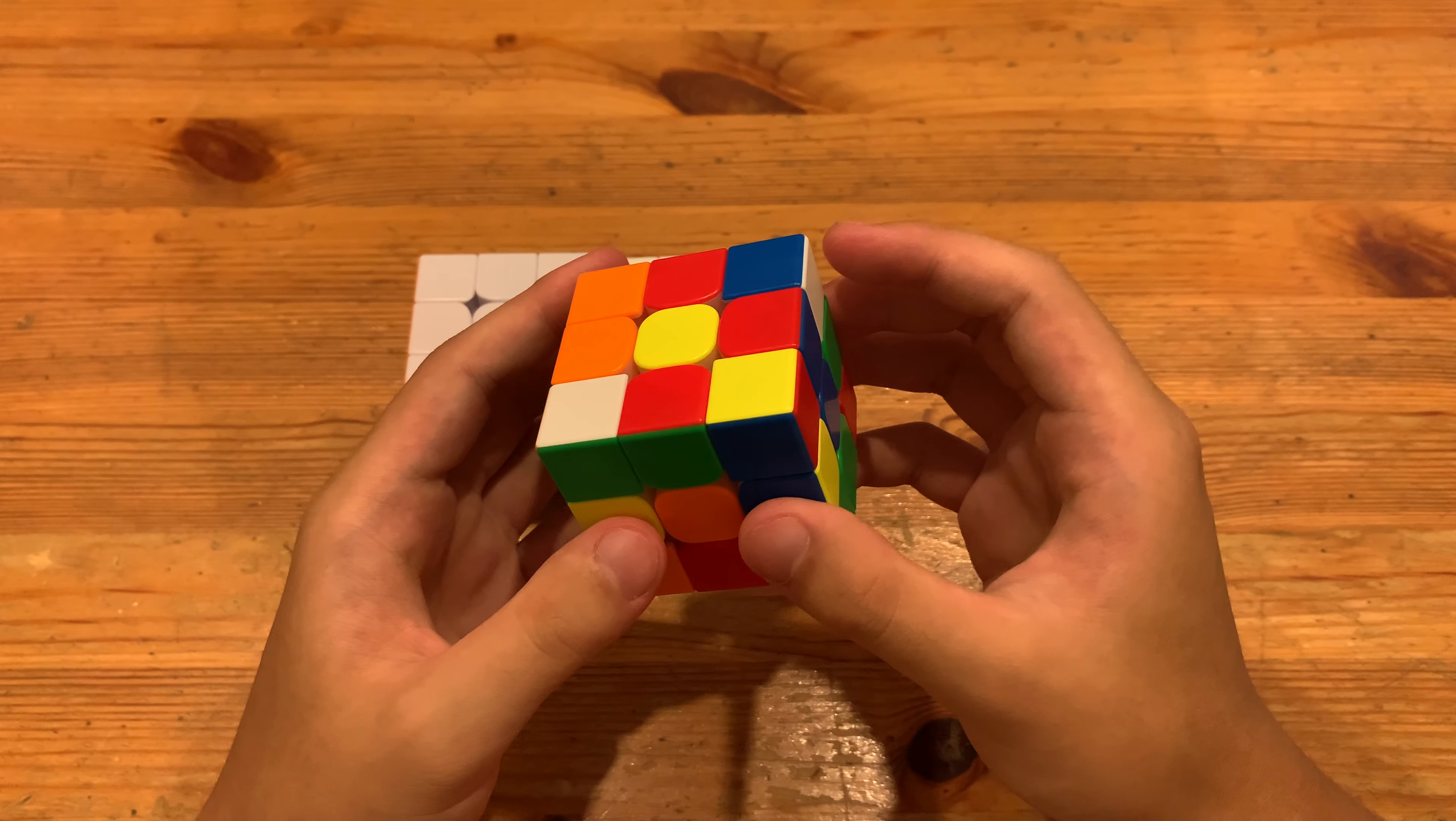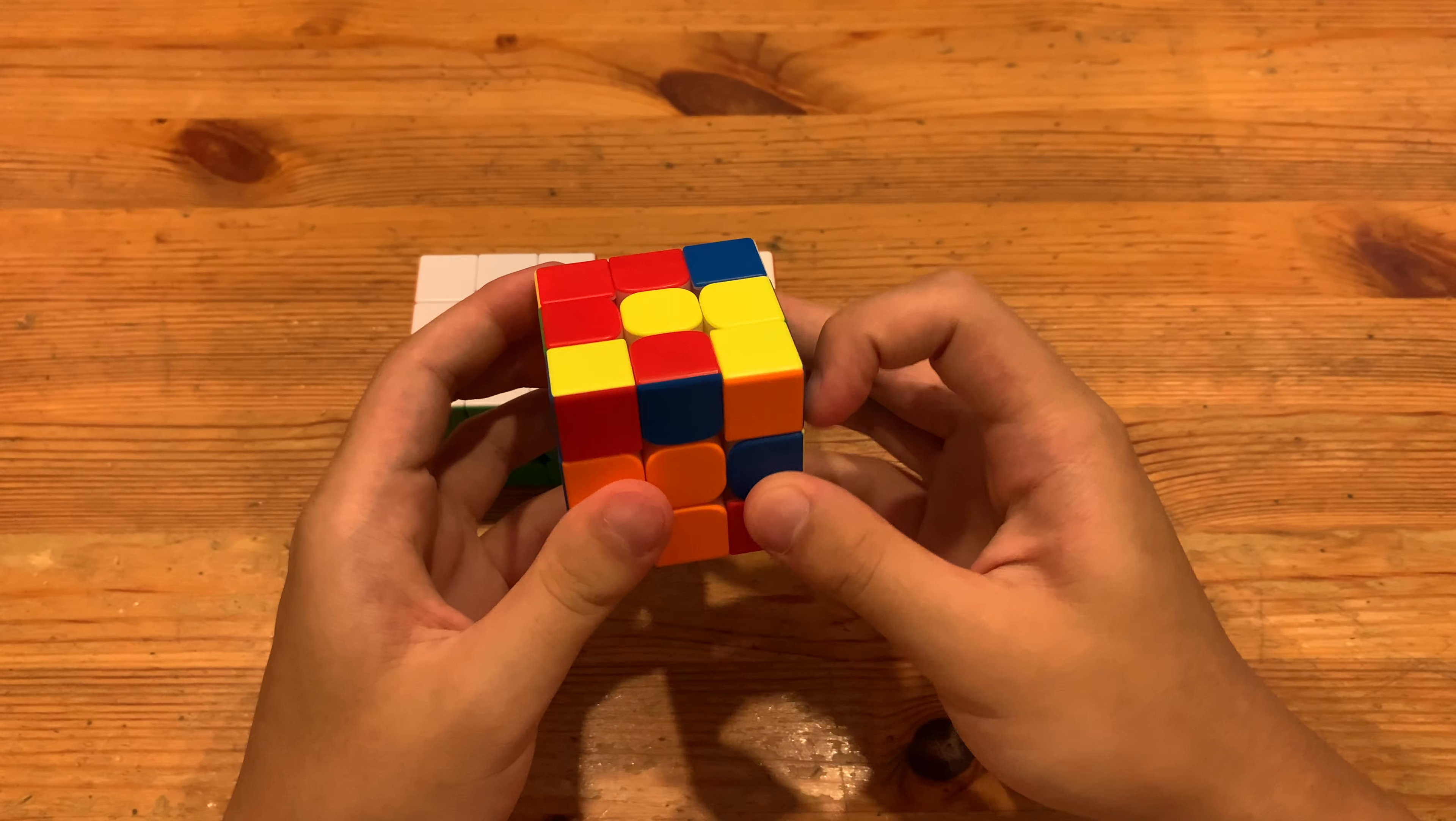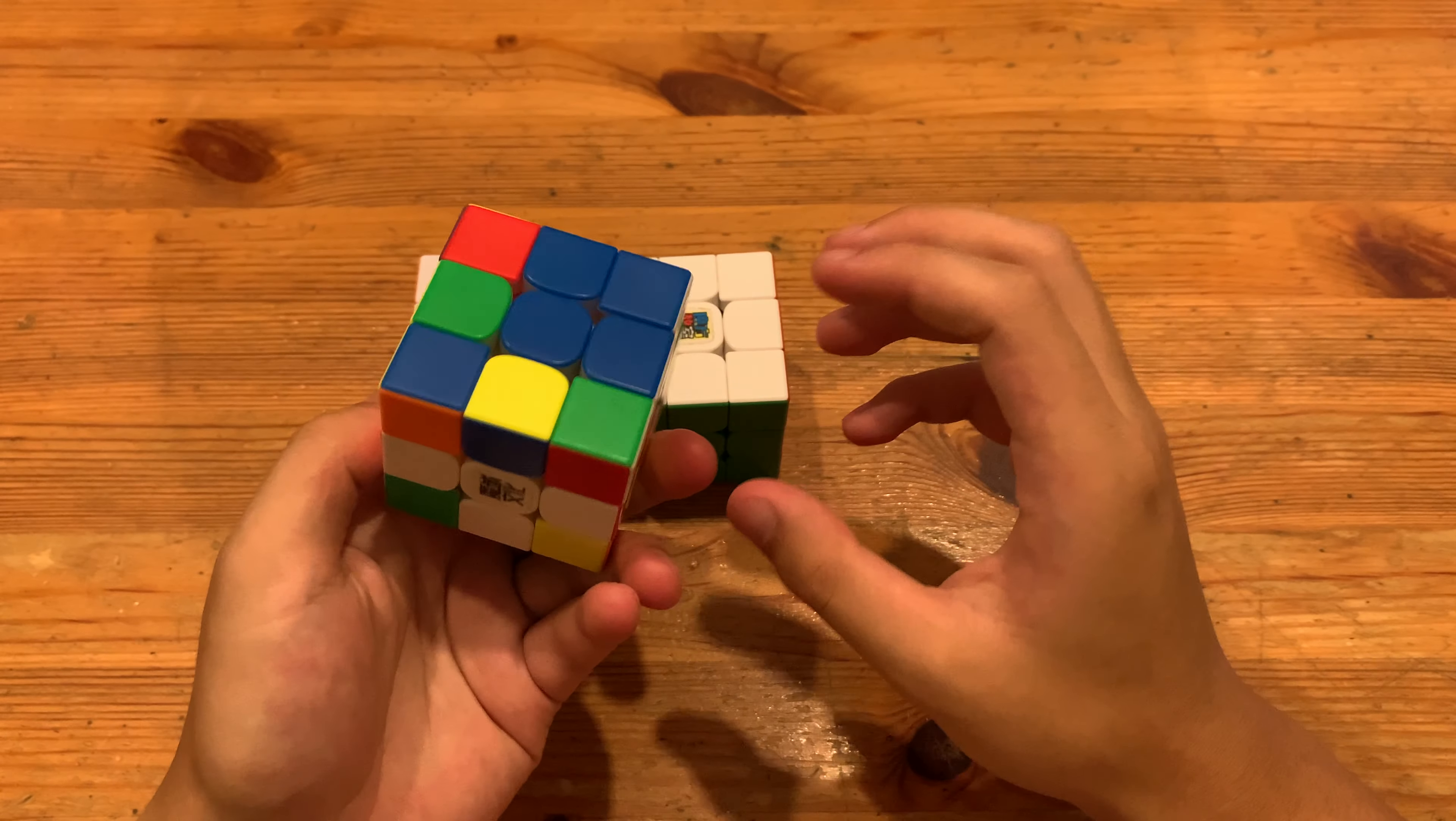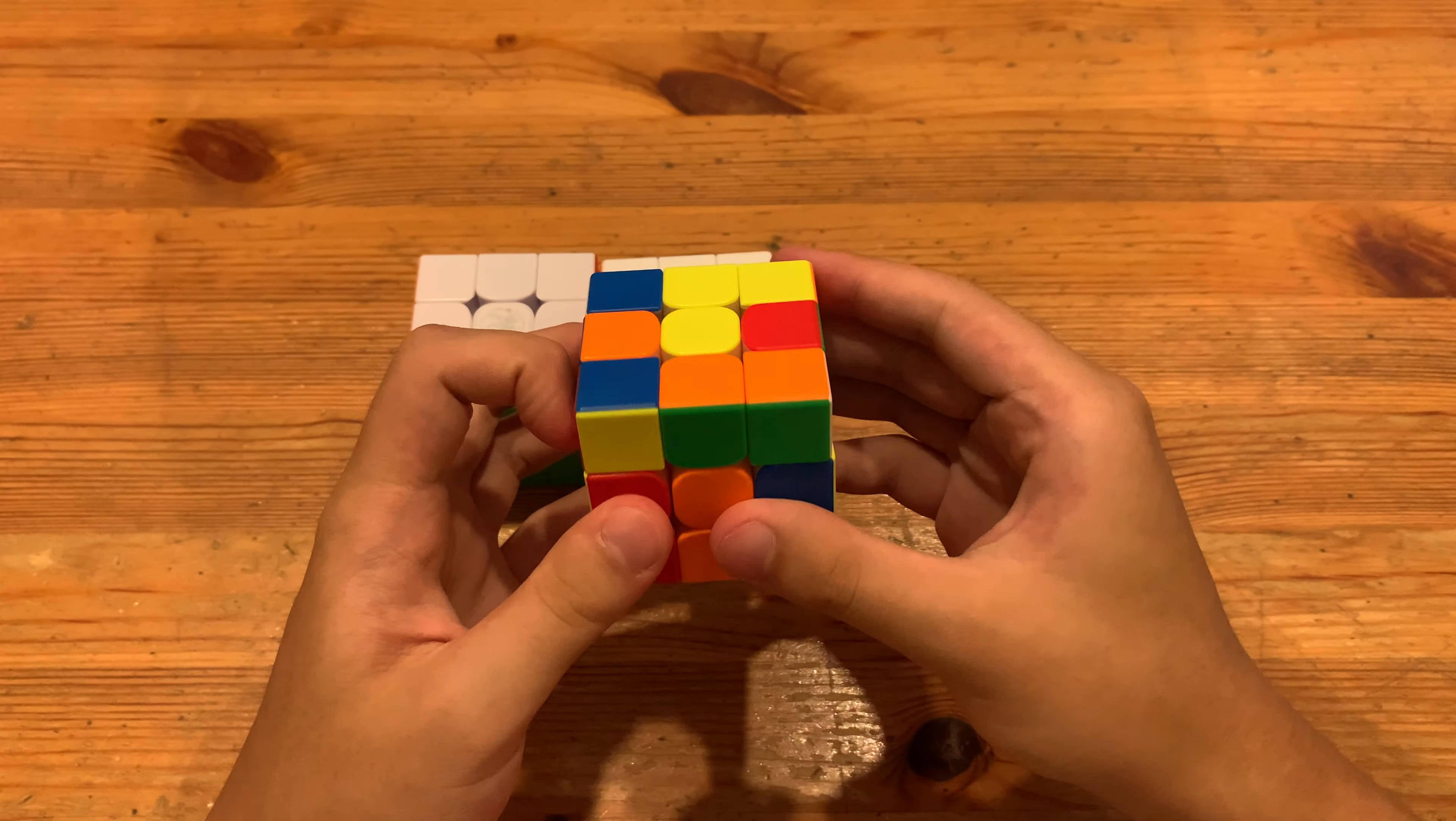But instead of just doing a D2, I would do a D2U F' at the same time. So I can pair this up with L' UL and then insert it to the back left. And then here I can just go right into solving this pair. So pair it up and then insert.